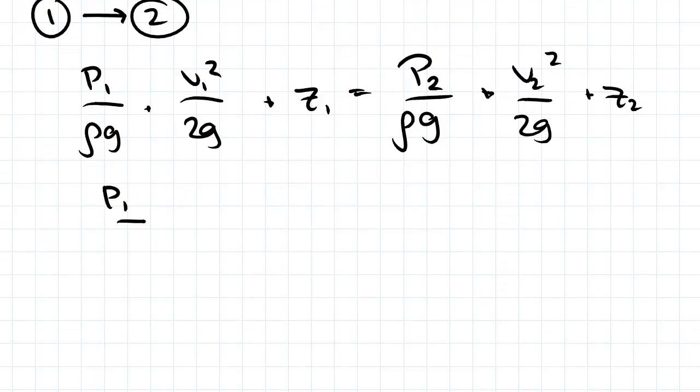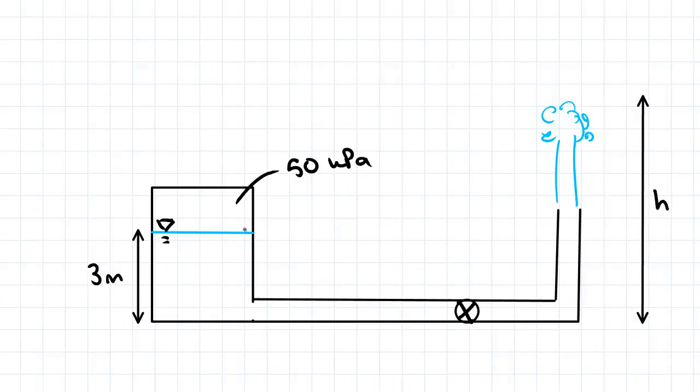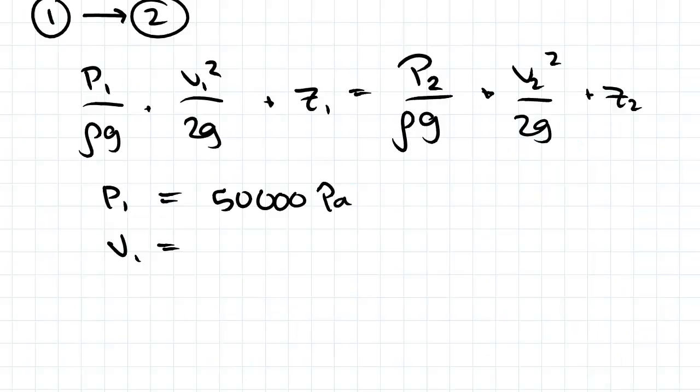Pressure 1 is going to be equal to 50 kPa, so 50,000 pascals. Velocity 1 will be 0 because it's at the top of the fluid and it moves at only a very small rate because the exit hole is so small. So that will be 0.